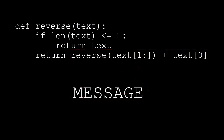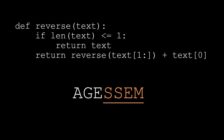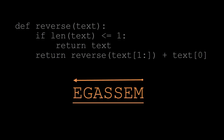The next time through the function, only 'essage' gets passed, and it returns 'ssage' passed through the function again, followed by 'e'. This continues to happen until the text passed to the function has a length of one, at which point it returns the completely reversed text to the original call.